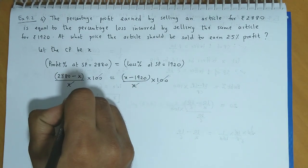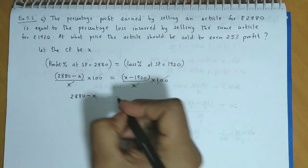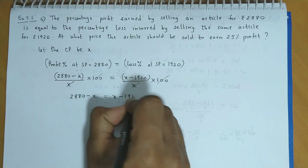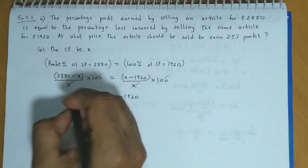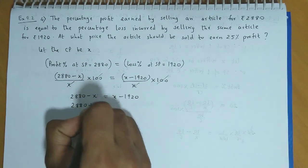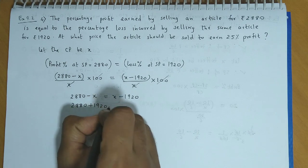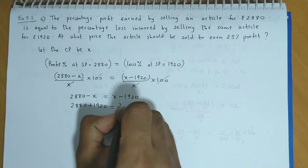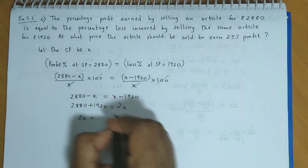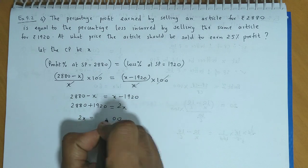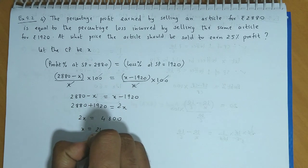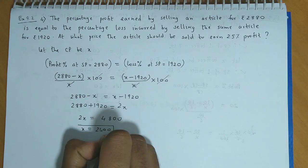So, we have 2880 minus x is equal to x minus 1920. यह से add हो जाएगा यहां पर. So, 2880 plus 1920 is equal to x plus x, that is 2x. So, 2x is equal to 4800, and x is equal to 2400.